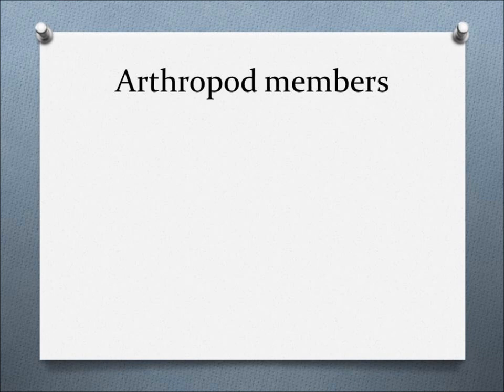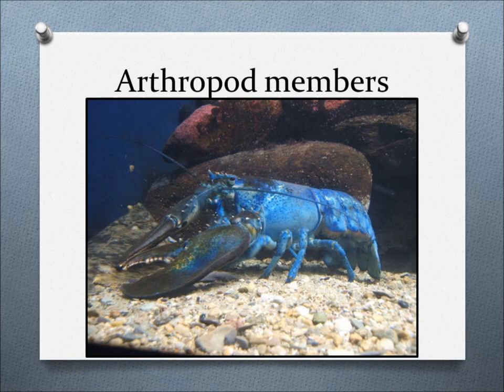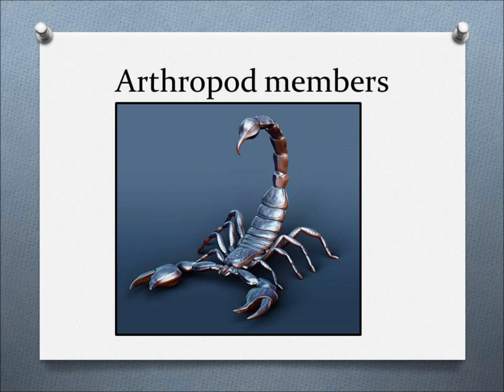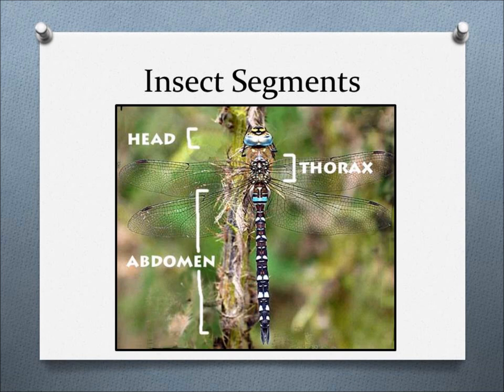Arthropods include organisms like millipedes, centipedes, insects, shrimp, lobsters, crabs, barnacles, isopods, copepods, sea spiders, horseshoe crabs, daddy longlegs, mites, ticks, scorpions, and even spiders. Insects have three tagmata: the head, thorax, and the abdomen. I will focus specifically on the head in this video.